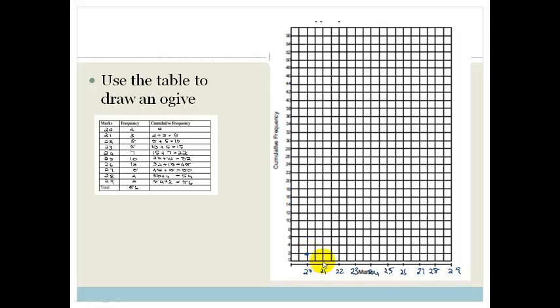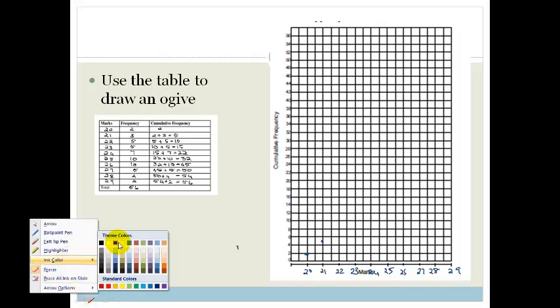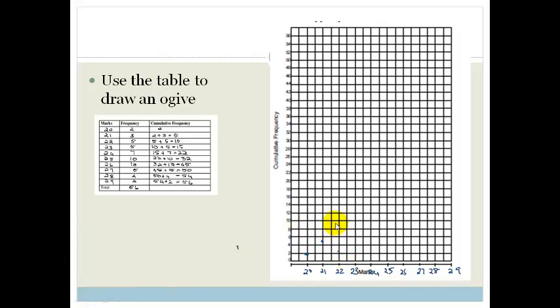So we can see that 2 people got 20. We have got 5 people, which is over here because that's 2, 4, 6. So we've got 5 people got 21. We have got 10 people who got 22 and less. We've got 15 people, which is over here. For 23, we've got 15 people. So for 24, we've got 22 people.